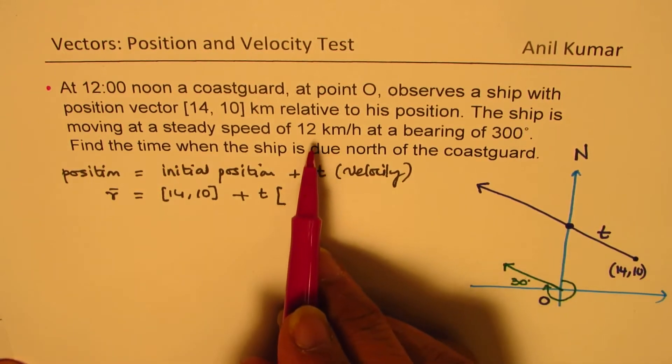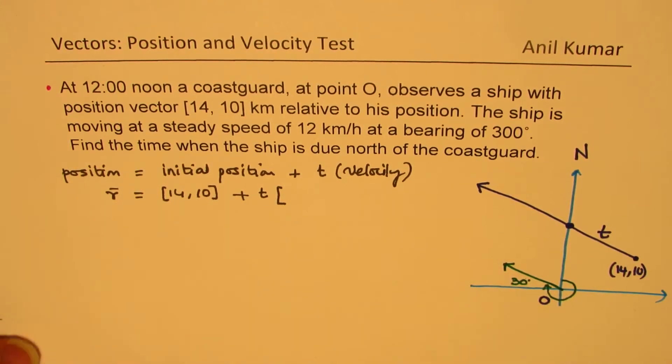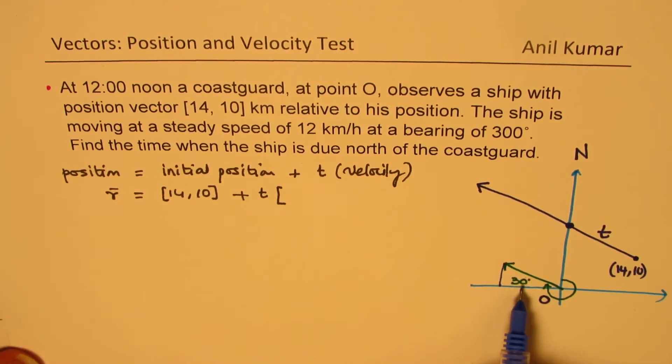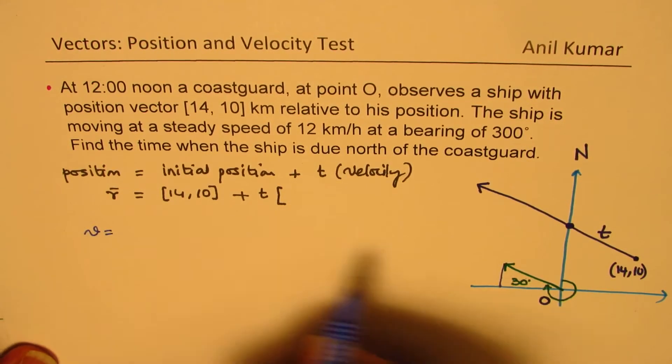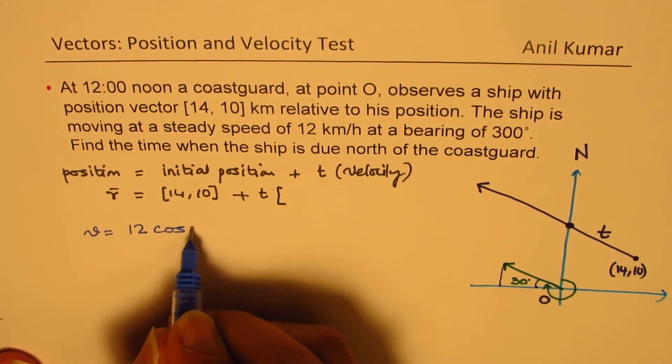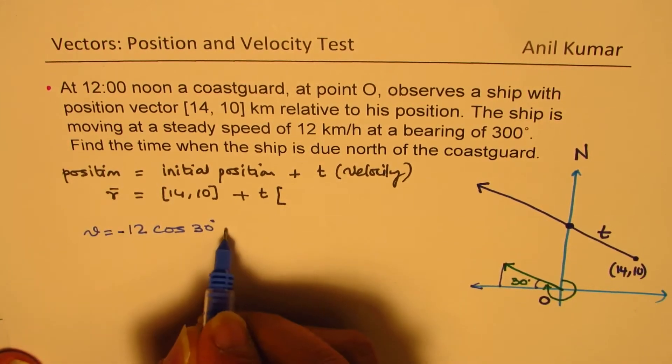We write this in the form of AI plus BJ. We have 12 kilometers. The I component will be cosine of 30 degrees, but negative. So velocity equals 12 cos 30 degrees. That's 30 degrees minus sine, because it's acting in this direction.